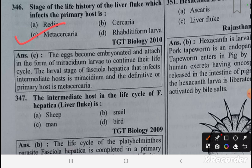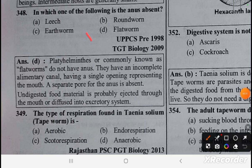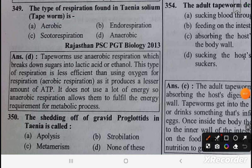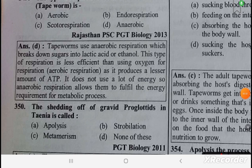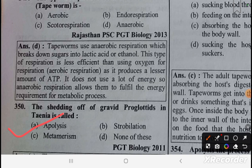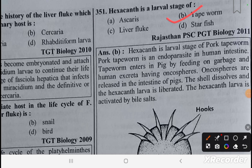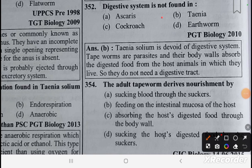The anus is absent in flatworms. The kind of respiration found in tapeworms is anaerobic. The shedding of gravid proglottids in Taenia is called apolysis. The hexacanth is the larval stage of the pork tapeworm.